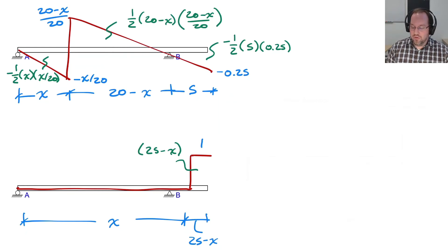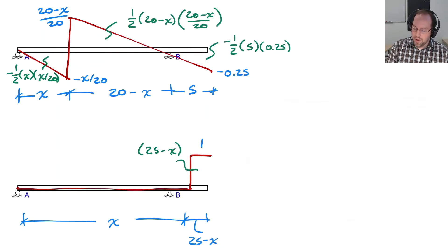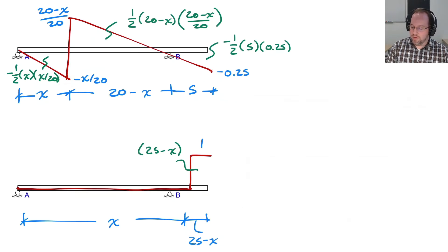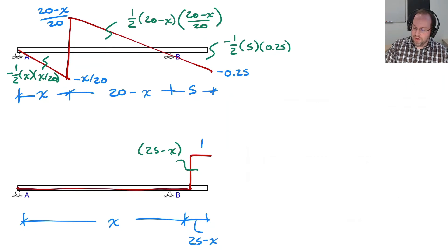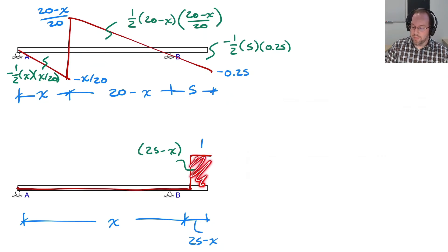We can continue with the same process as before, knowing that areas and peaks are now just functions of x. For negative shear you'll have to compare two different peaks — there's a possibility that the load out on the cantilever controls, or the one in the span controls — so you'll need to check both. For the cantilever span, there's no possibility of negative shear; the peak is always at the end in only a positive area. This process can be automated with a spreadsheet to find the shear envelope.